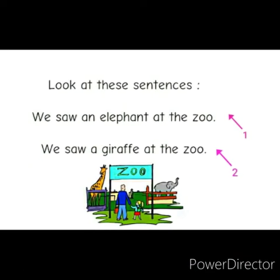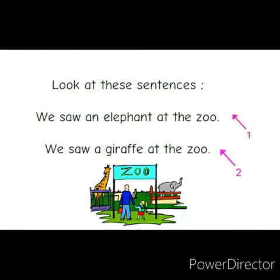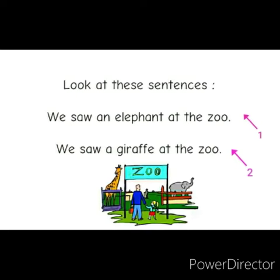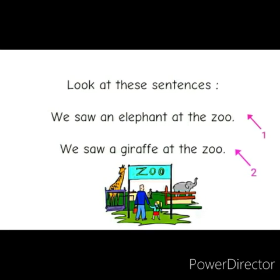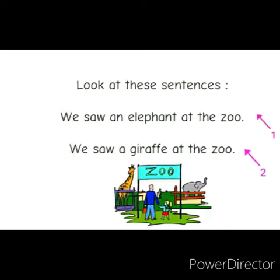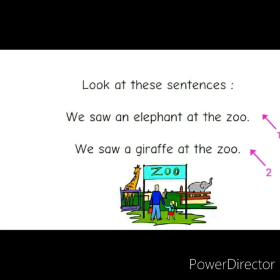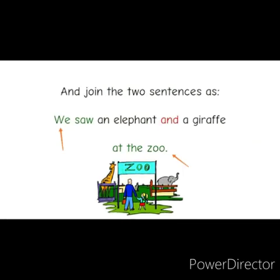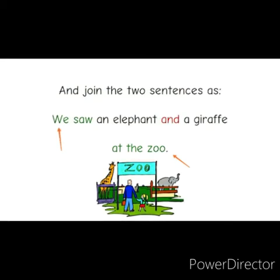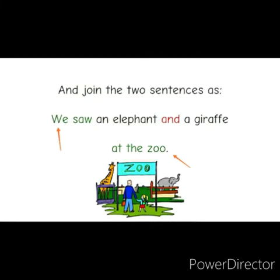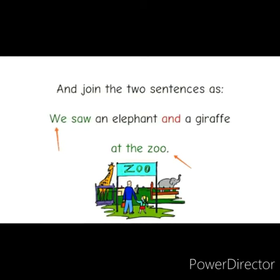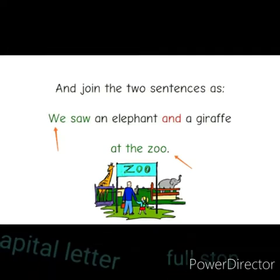Now one more example. Look at these sentences. First: 'We saw an elephant at the zoo.' Second: 'We saw a giraffe at the zoo.' So the action is the same, but you have seen two different animals. How can we make it into one sentence? We saw an elephant and a giraffe at the zoo. The meaning is the same, and by using the joining word 'and' we have made two sentences into one simple sentence.